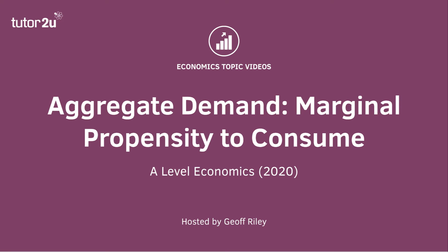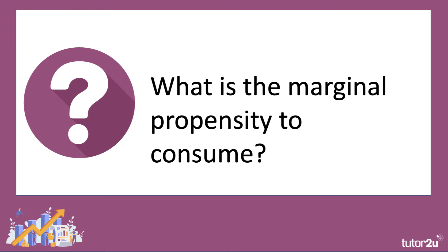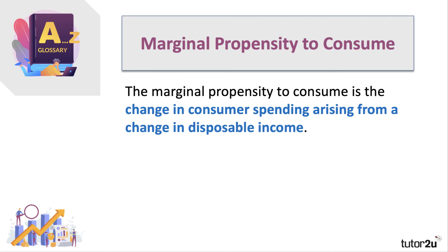In the last video we spent a few minutes thinking about the key factors that determine consumer spending. In this video we drill down into a bit more detail and focus on a key concept: the marginal propensity to consume, or MPC for short. The MPC is defined as the change in consumer spending resulting from a change in somebody's disposable income.